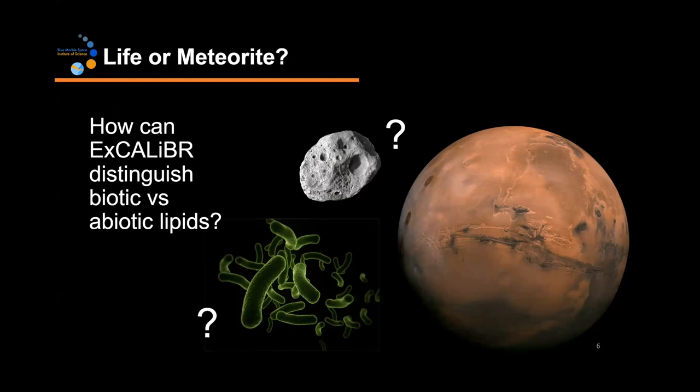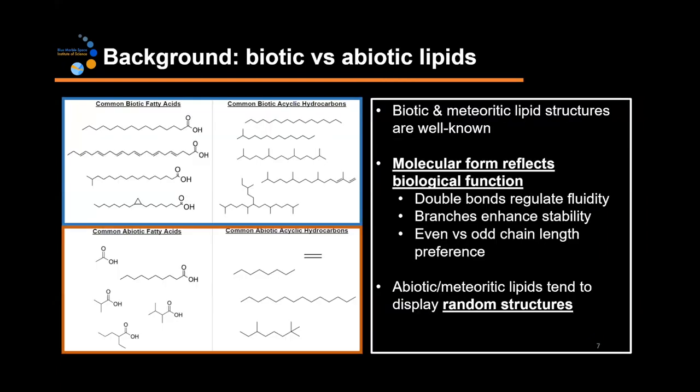But how can Excalibur determine whether those lipids that it extracts came from ancient life or a meteorite? We can look to decades of research in organic geochemistry. Because lipid analyses are so prevalent on Earth, we have a lot of literature to draw from. And we know that biotic and meteoritic lipid structures are well known, and they're different.